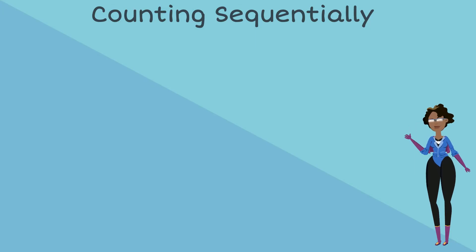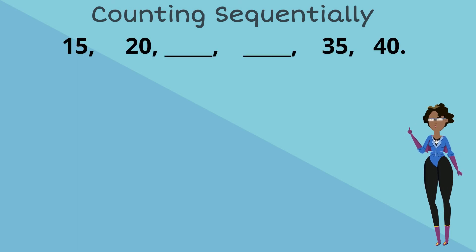For our last example, let's see if we can fill in the blanks skip counting. But we also have to figure out what number or interval we skip counting in. Let's see. Look at the numbers on the screen. There are two blanks in this sequence. How many numbers are there after 15 until we reach 20?